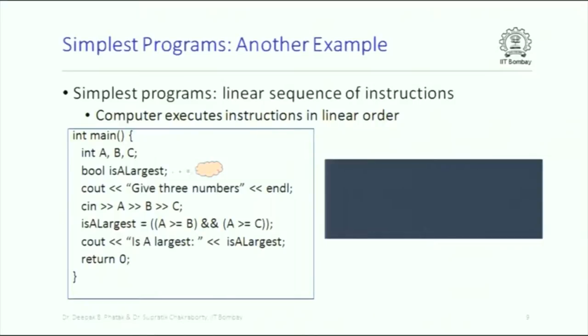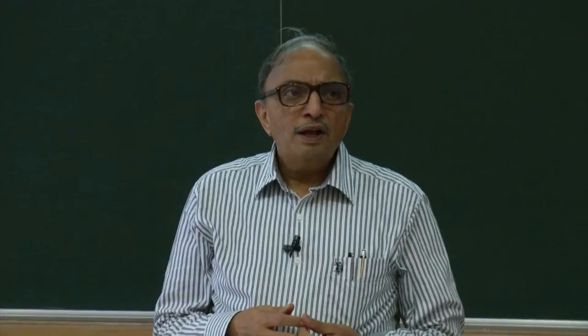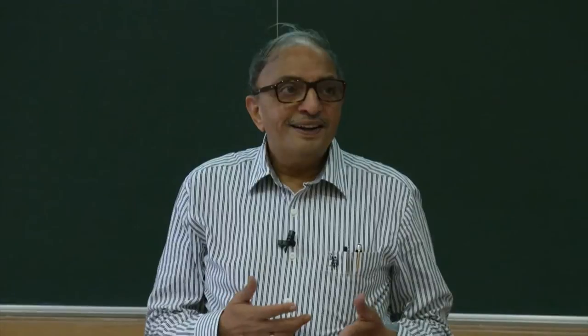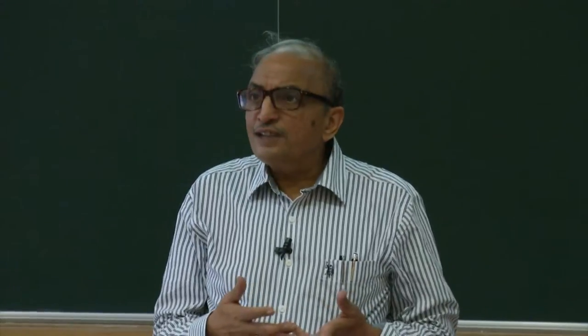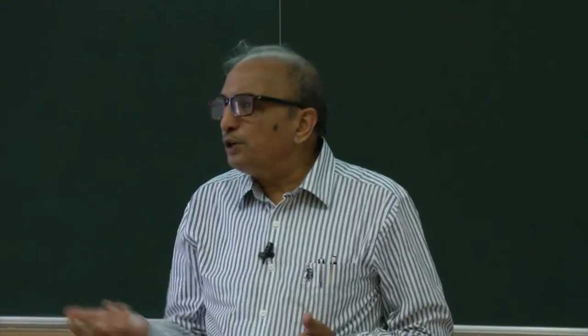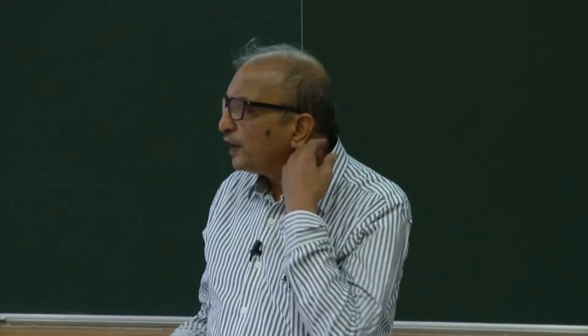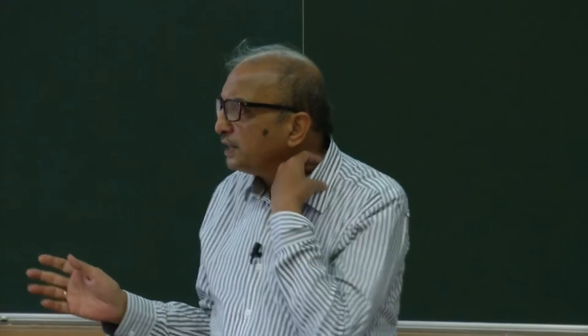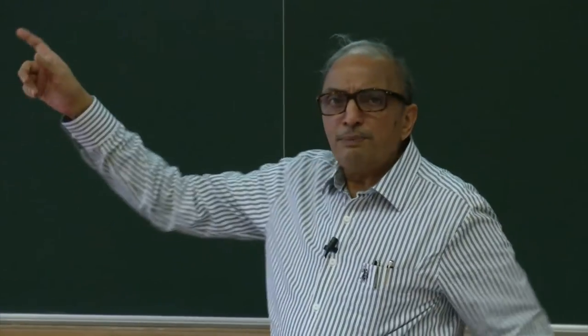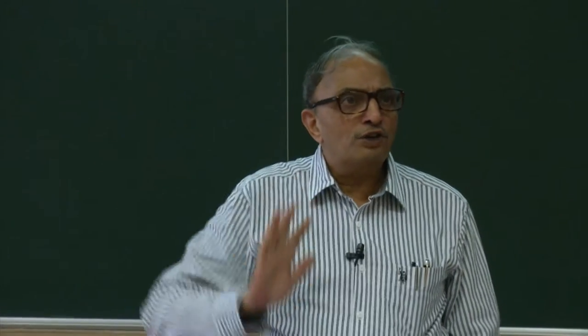The next is bool isLargest. We want that to be either true or false — if A is largest we expect it to be true, otherwise false. That's the intention. As far as the compiler is concerned, it doesn't care about the meaning of the name you give — name is your choice. Internally it might choose any numbered memory location.